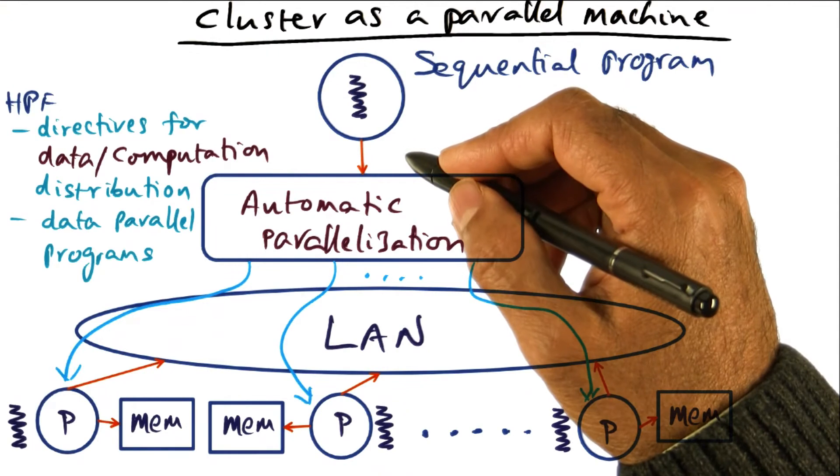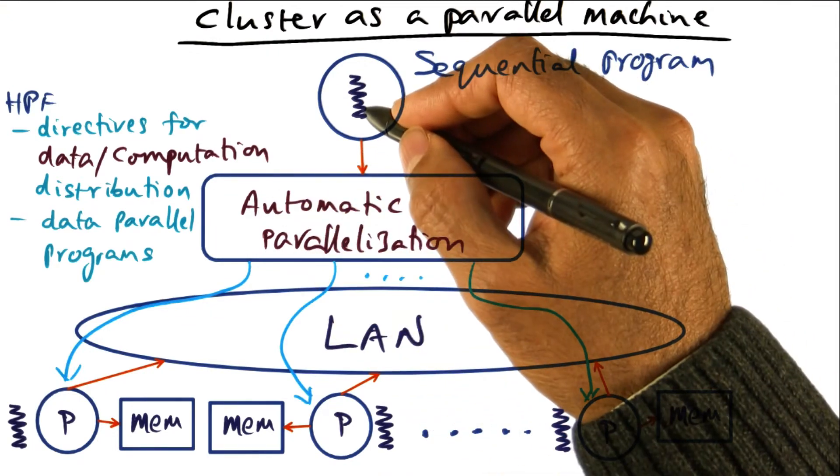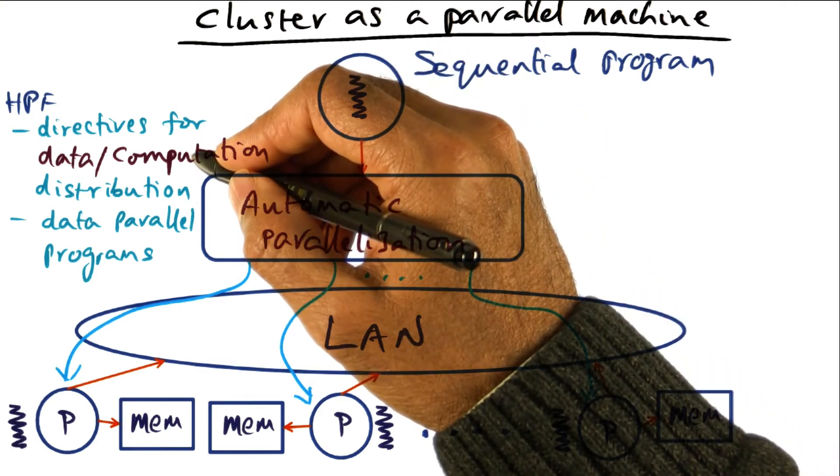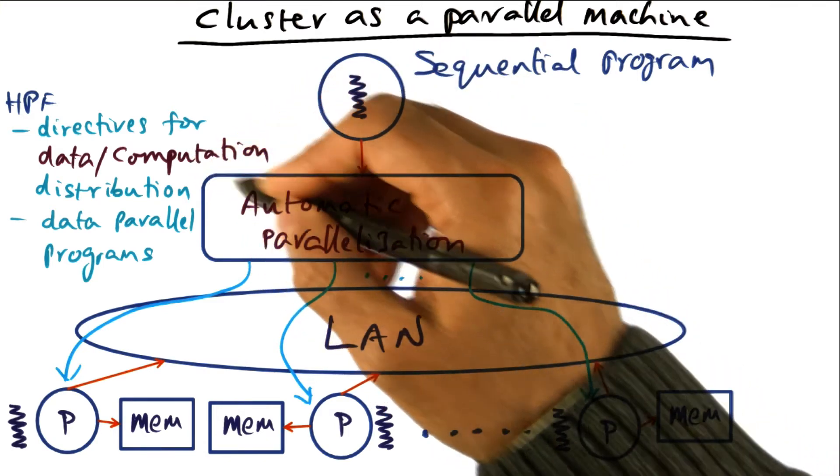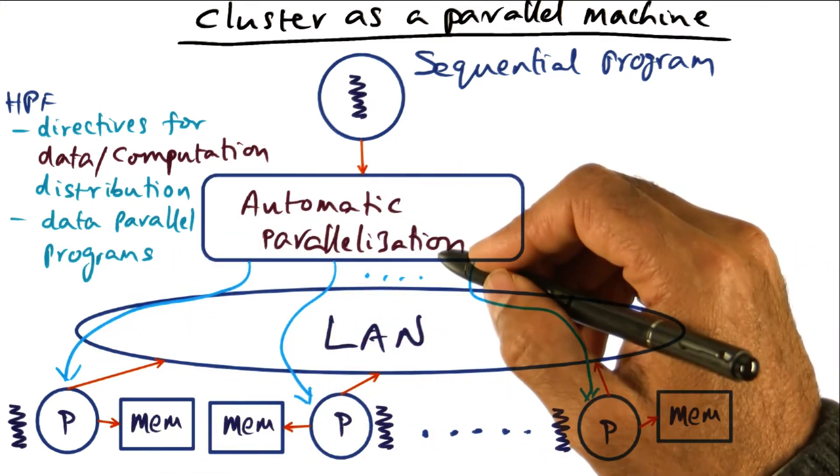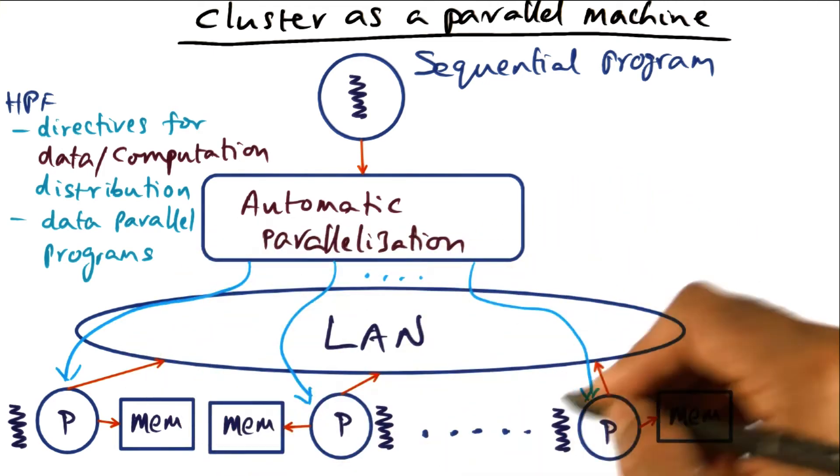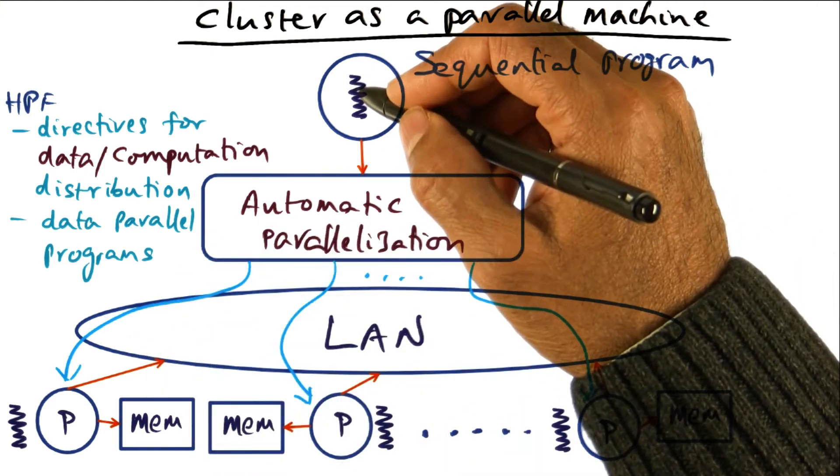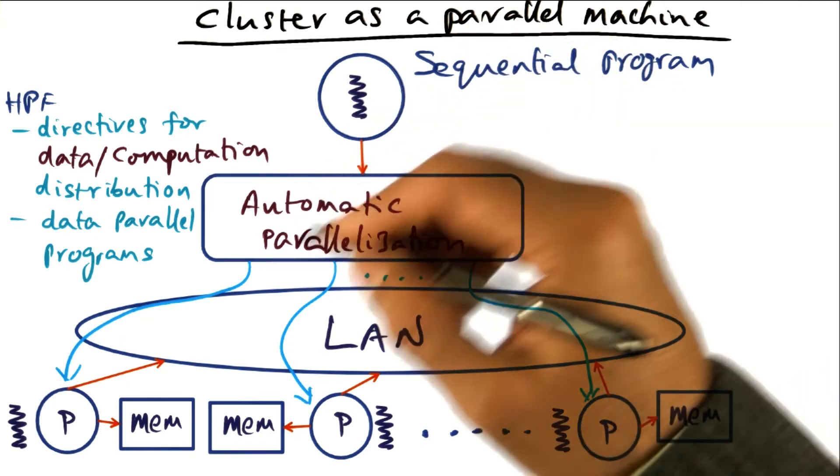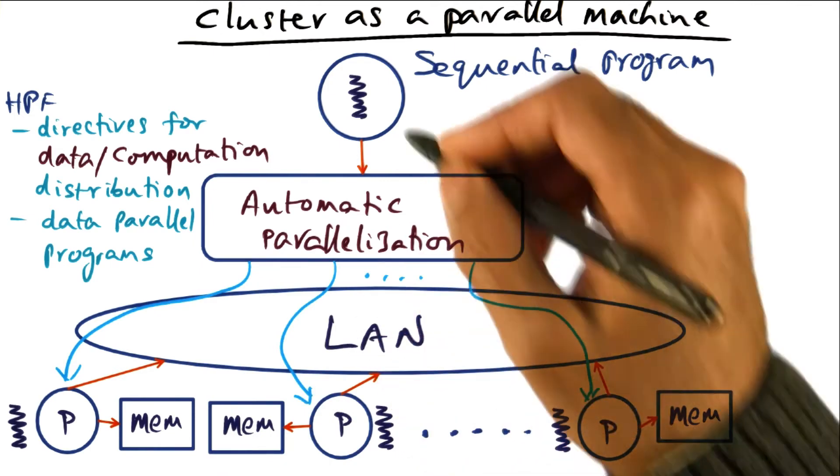And those directives are then used by this parallelizing compiler to say, oh, these are opportunities for mapping these computations onto the resources of a cluster. So it puts it on different nodes of the cluster and that way it exploits the parallelism that is there in the hardware, starting from the sequential program and doing the heavy lifting in terms of converting the sequential program to a parallel program to extract performance for this application.